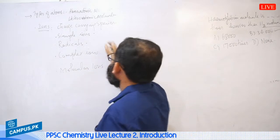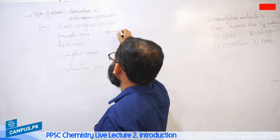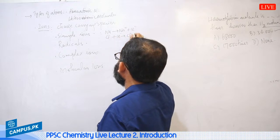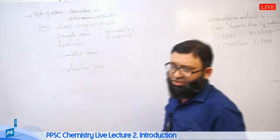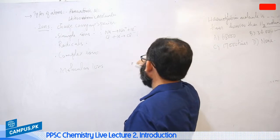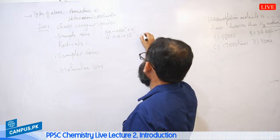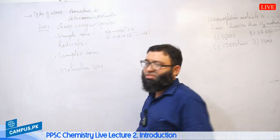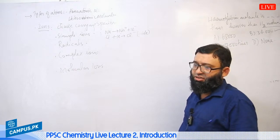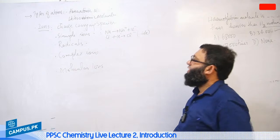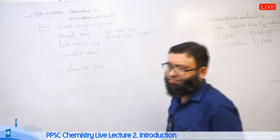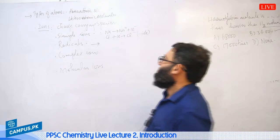Next we have ions. Charge-bearing species are called ions. Ions include simple ions, charge-bearing radicals, complex ions, and molecular ions. For example, if a sodium atom loses an electron it becomes Na⁺, and chlorine by accepting an electron becomes chloride (Cl⁻). These are called simple ions. For negative ions, we add the suffix '-ide': chlorine → chloride, fluorine → fluoride, iodine → iodide.